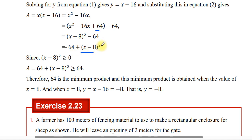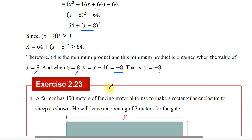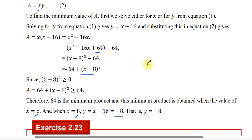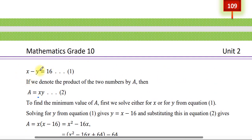Since (X minus 8) squared is always greater than or equal to 0, A = (X minus 8) squared minus 64 ≥ negative 64. Therefore the minimum product is negative 64, obtained when X = 8 and Y = X minus 16 = negative 8.